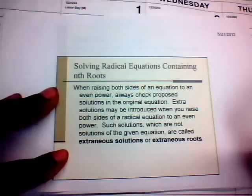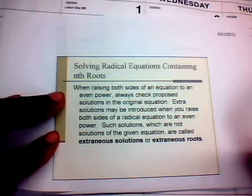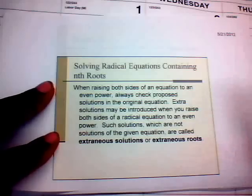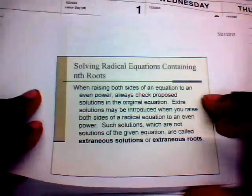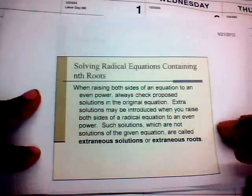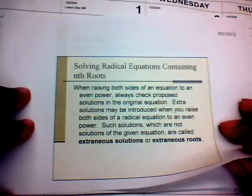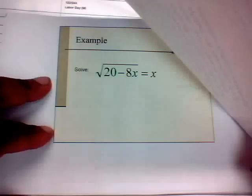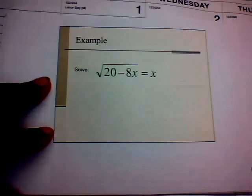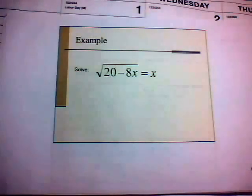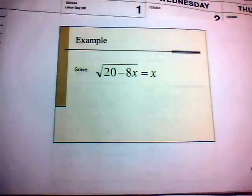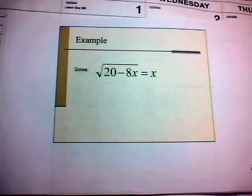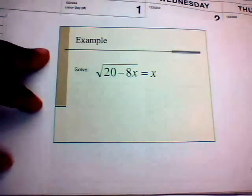Solutions that don't satisfy the original equation are called extraneous solutions or extraneous roots. You must always perform the check — you cannot assume both answers satisfy the equation.